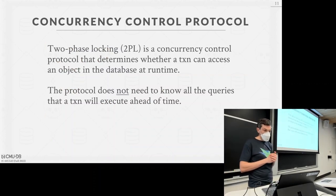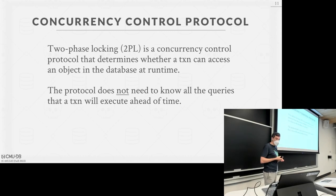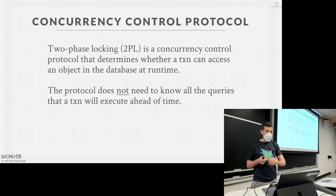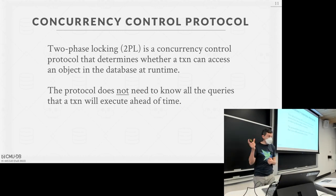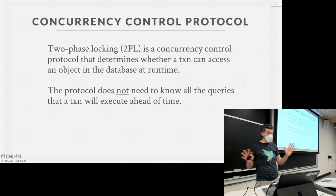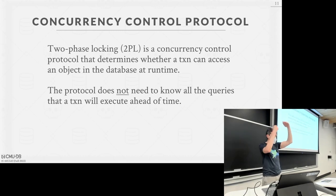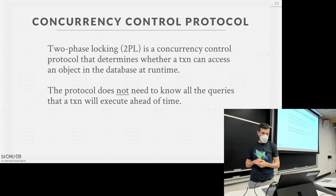This is what two-phase locking — the 2PL concurrency protocol — addresses. Invented by IBM in the 1970s for System R, it's the first provably serializable concurrency protocol. It's a pessimistic protocol: you assume transactions will have conflicts and require them to acquire locks on anything they want to touch before they can do anything. Unlike last class where we needed the complete schedule ahead of time, in 2PL we don't need to know all queries ahead of time — we acquire locks on the fly as queries are issued.